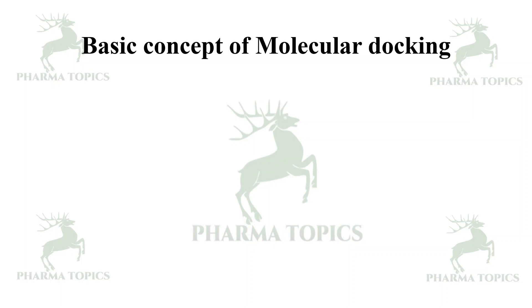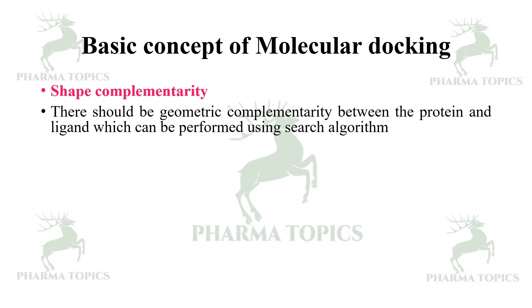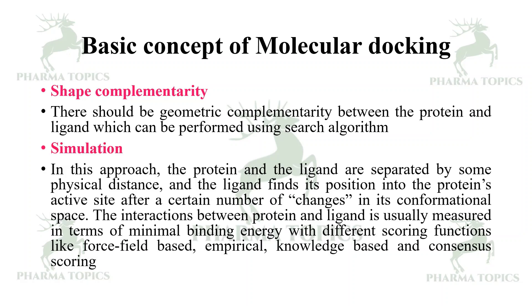Let us see the basic concepts of molecular docking. One is shape complementarity — there should be geometric complementarity between the protein and the ligand, which can be performed using search algorithms. Then simulation — in this approach, the protein and the ligand are separated by some physical distance and the ligand finds its position into the protein's active site after a certain number of changes in the conformational space. The interaction between the protein and the ligand is usually measured in terms of minimal binding energy with different scoring functions.